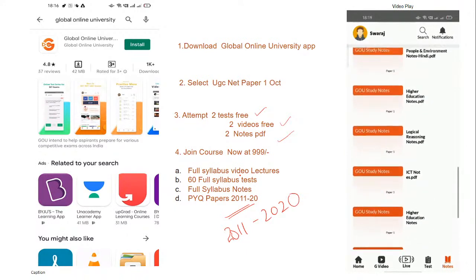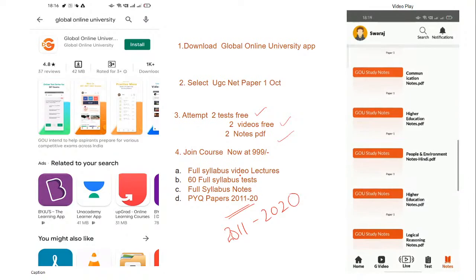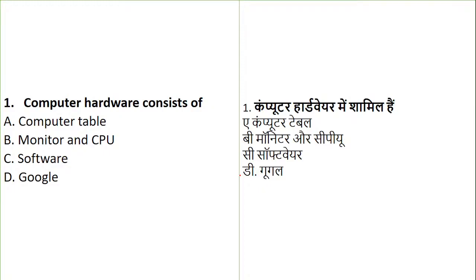There are five questions from this unit, worth ten marks total. Let's start. Question number one: Computer hardware consists of what? Is it a computer table, a monitor and CPU, software, or Google? A very easy question to start with, for all non-IT students.